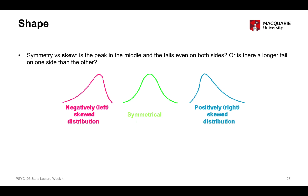The middle graph is the symmetrical distribution — neither left nor right skewed. If you draw a line down the middle, the left side is pretty much the same as the right side. The blue graph at the top is a positively skewed or right-skewed distribution, where the tail goes up to the positive or right side of the scale. Being approximately symmetrical is one of the features of a normal distribution.